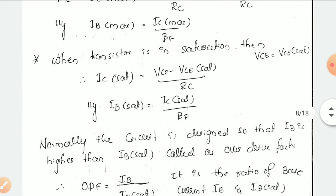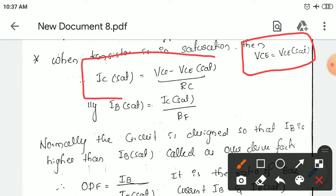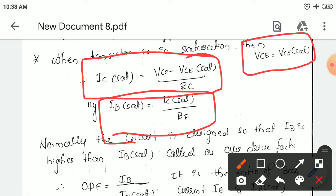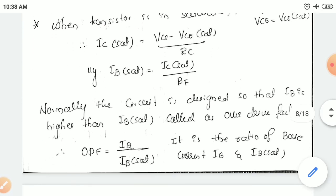When the transistor is in saturation region, collector to emitter voltage equals the collector to emitter saturation voltage. In that case, IC saturation = (VCC minus VCE saturation) divided by RC. Using that, you can calculate the saturation value of the collector current. Similarly, the saturation value of the base current is calculated as IC saturation divided by beta F.